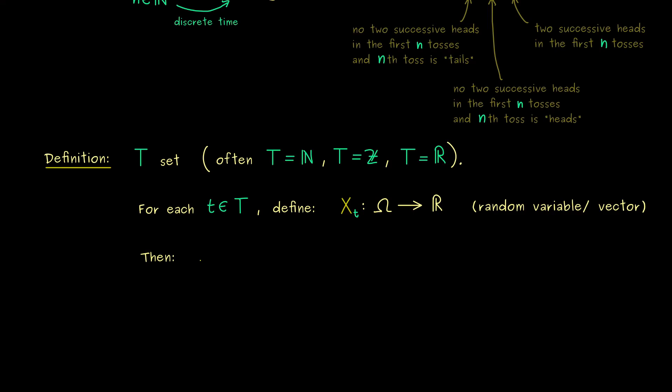And now the only thing we have to do is to put these maps into a sequence. And the short notation would be with parentheses where we put t and T on the index. And now we have it. This object is what we call a stochastic process.